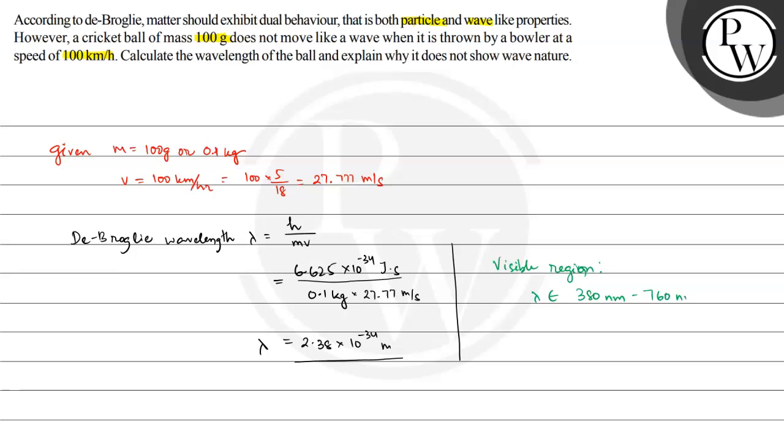760 nanometers, and the minimum wavelength, that is 3.8 multiplied by 10 raised to the power minus 7 meters to 7.6 multiplied by 10 raised to the power minus 7 meters.